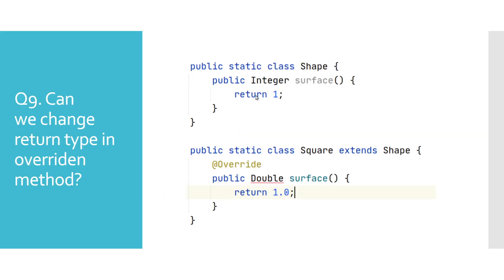Can we change the return type in an overridden method? We know that for overriding we need a subclass and a superclass, and both should have a method with the same signature. But since return type is not part of the signature, does that mean we can change it? The short answer is no — we need to follow some basic rules in order to change the return type of an overridden method.